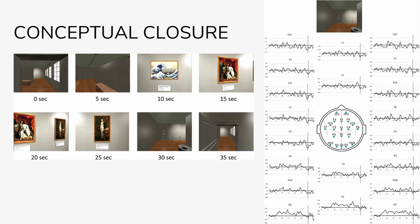Specifically, the frontal system was most responsible for tracking those changes. In the graph you can see vertical lines — across all channels there's a drop in the signal at around 35 seconds. This deflection is aggregated across many participants, making it a robust phenomenon. When people experience conceptual closure, you see this consistent brain response — essentially a conceptual closure metric.